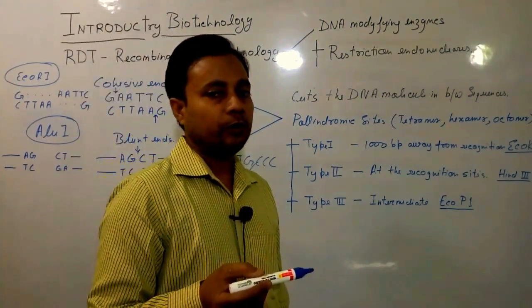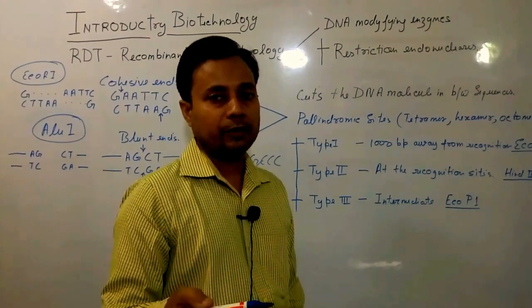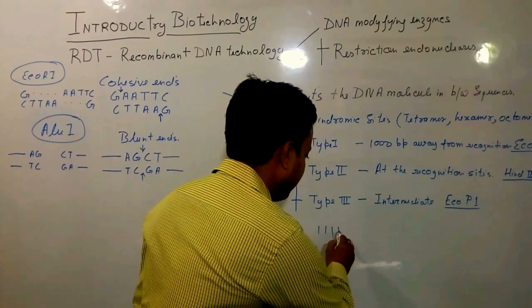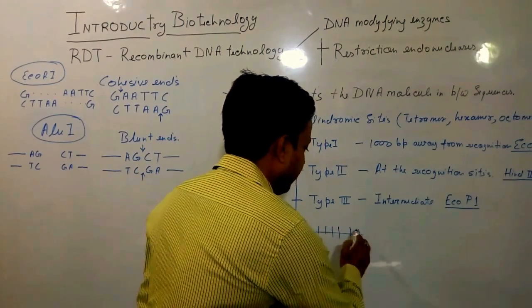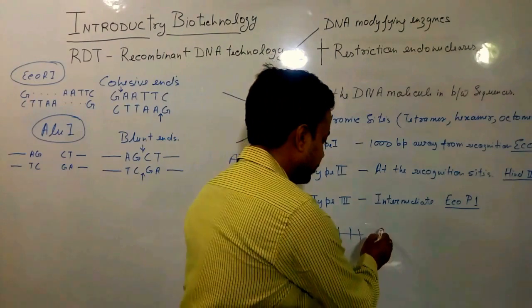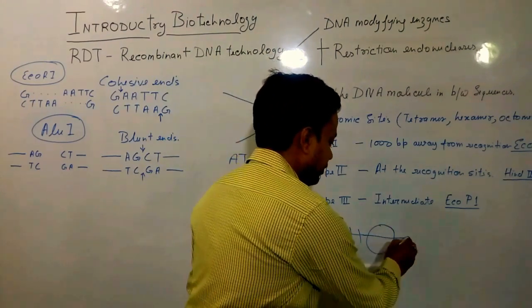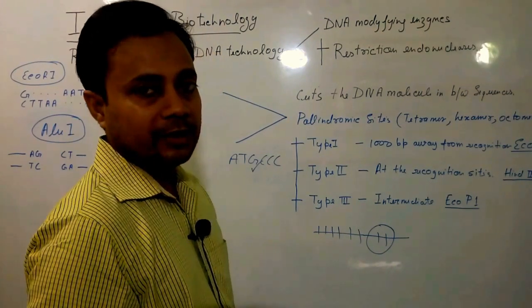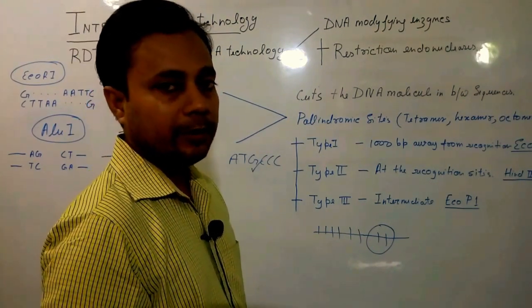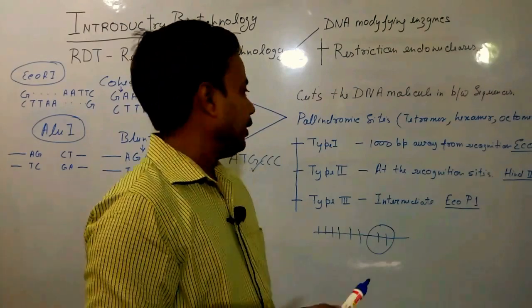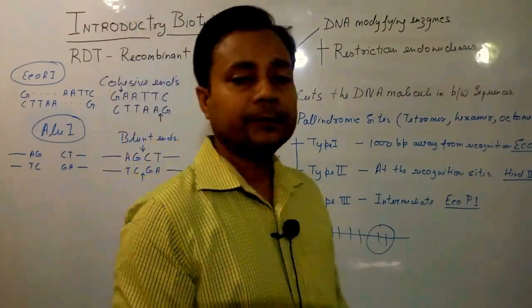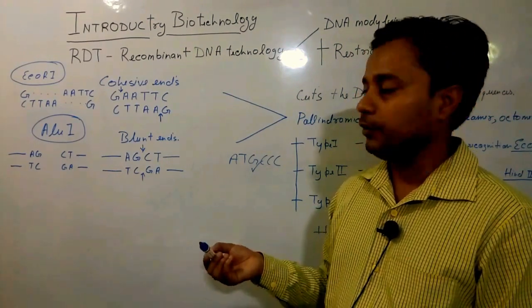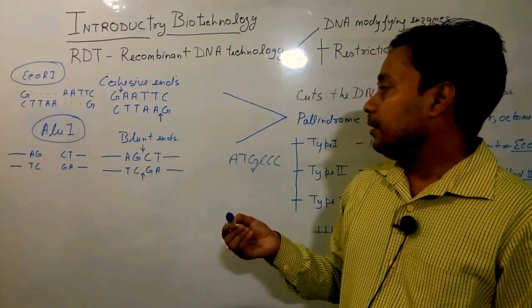Type 3 endonucleases tend to cut DNA molecules in the close vicinity of their recognition sites. For example, if a hexamer is the recognition site, the enzyme cuts somewhere in the nearby region of the DNA molecule. This classification is based on the cutting ability, and the next classification is based on the kind of ends produced after digestion, which can be of two types.